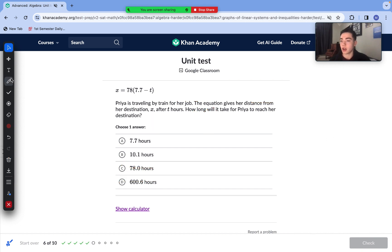Moving on to question number six here. We have an equation and we need to figure out how long it will take Priya to reach her destination if she's traveling by train to her job. The equation gives the distance from her destination x after t hours. So when Priya reaches her destination, the distance from her destination is of course going to be equal to zero. So we're going to set our x to zero and solve for t. First step here, distribute. 78 times 7.7 is 600.6. So 0 = 600.6 minus 78t.